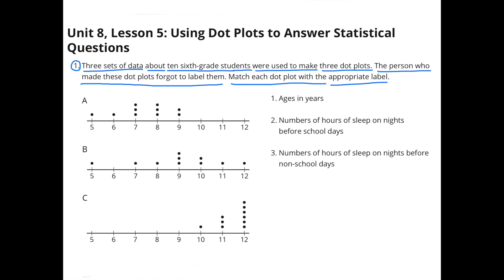The first dot plot, letter A, goes with number 2, the number of hours of sleep on nights before school days. The second dot plot, B, matches with number 3, numbers of hours of sleep on nights before non-school days. And finally, dot plot letter C matches with number 1, ages in years.